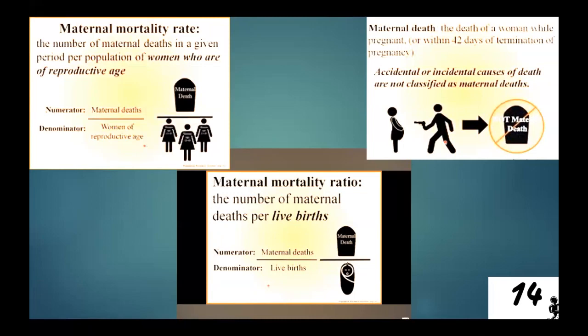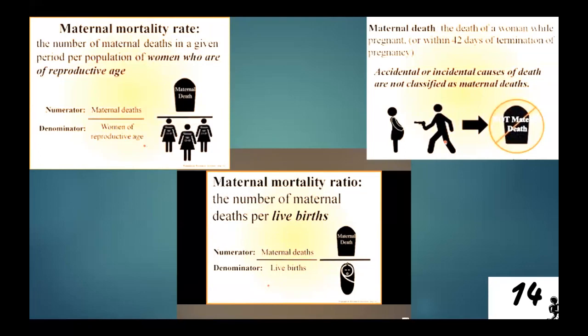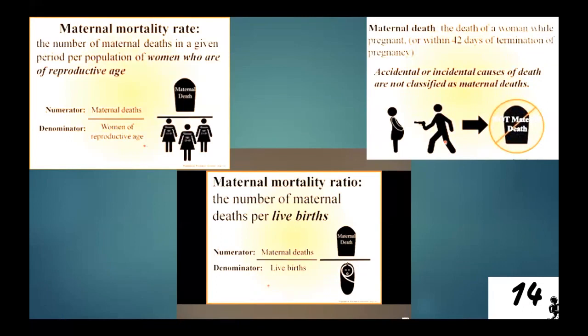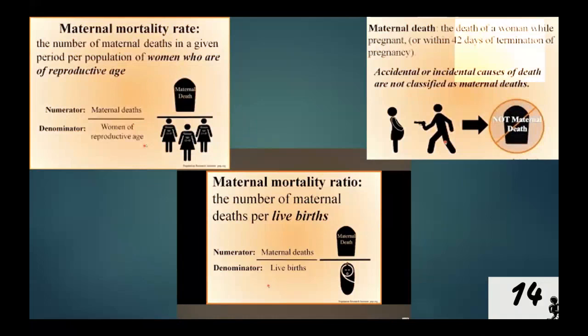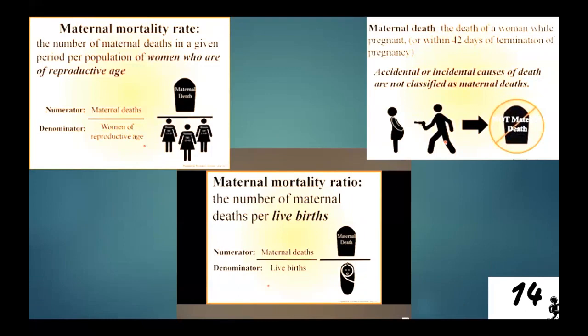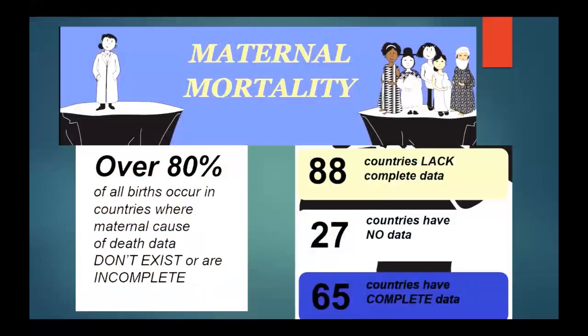A maternal mortality rate would be the number of deaths over women of reproductive age, but what's typically used is the number of maternal deaths over the number of live births — it's just harder to calculate all the women of reproductive age, and this has become the standard. A maternal death is a death from any cause, including incidental things not directly related to pregnancy. A lot of births occur in countries where there's not very good data. There are about 200 countries in the world, and a good number don't have data at all. Only 65% show they have complete data.